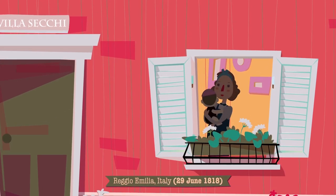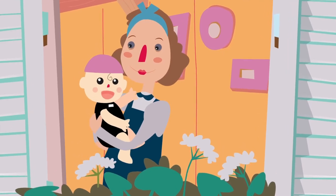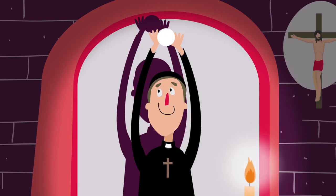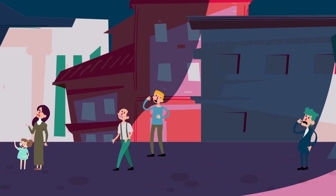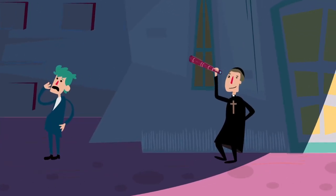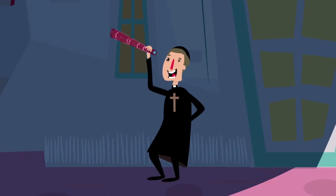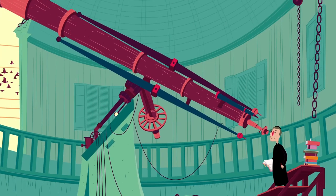Angelo Secchi nació en la ciudad italiana de Reggio Emilia un caluroso día de verano. Desde muy joven estudió para ser sacerdote. Sin embargo, lo que realmente le apasionaba era la astronomía. Por ello, entre otras cosas, el padre Secchi se dedicó a observar el Sol durante toda su vida.